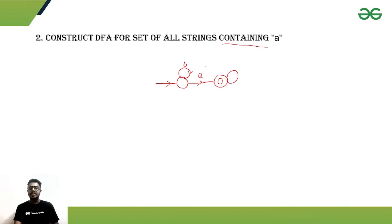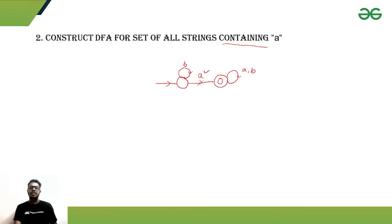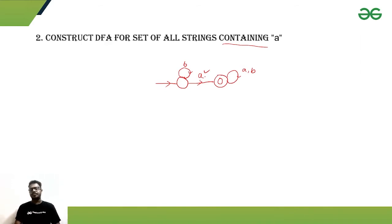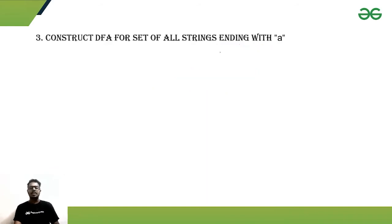Whenever we encounter that specific 'a', we will reach the final state. In the final state there can be any number of a's and b's after that 'a'. So whenever we encounter a single 'a', our string is accepted. This is the overall DFA for that question.